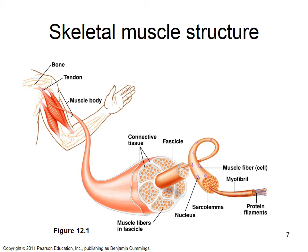To understand how muscle contracts, we need to understand its cellular structure. A fascicle is a bunch of muscle fibers wrapped in connective tissue. The muscle fiber is the cellular unit of skeletal muscle. Early in development, multiple cells fuse together so muscle fibers run the entire length of the muscle.